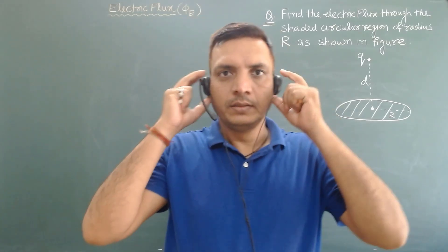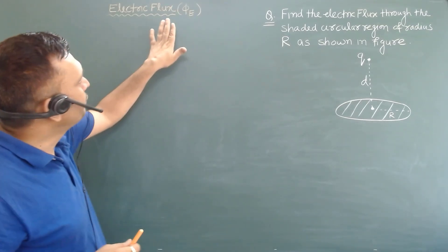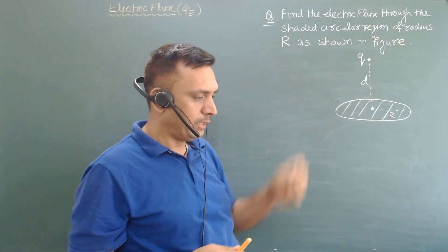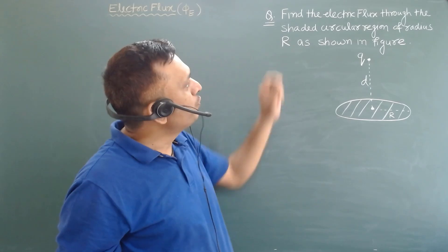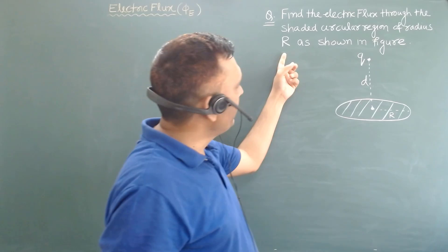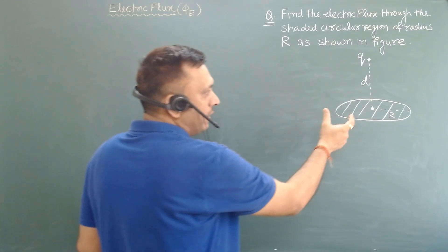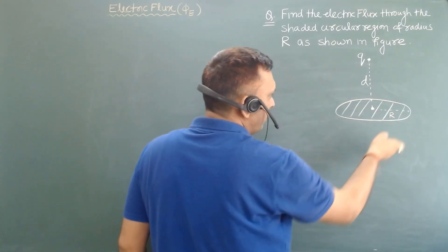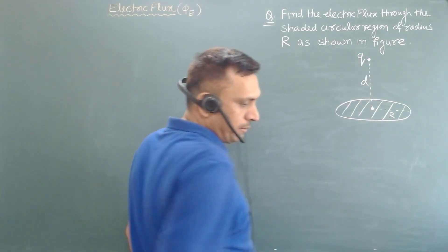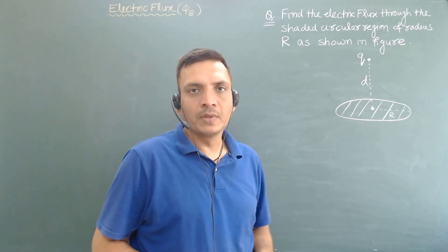Hello everyone. In this video I will discuss the concept of electric flux. I will take this particular example in which we have to find the electric flux through the shaded circular region of radius capital R. As shown in this figure, there is a shaded circular region and at distance d above the center a point charge q is placed, and we have to find the flux through this region.